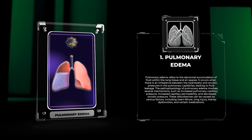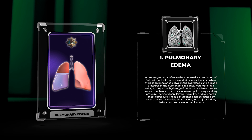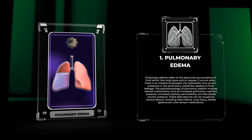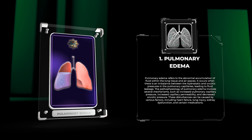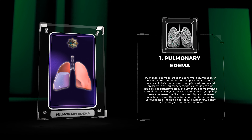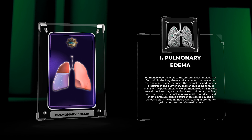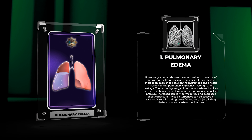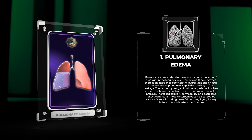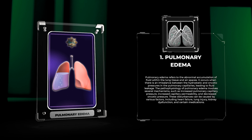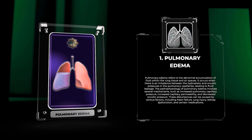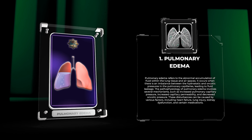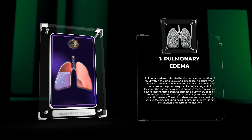The pathophysiology of pulmonary edema involves several mechanisms, such as increased pulmonary capillary pressure, increased capillary permeability, and decreased oncotic pressure. These disturbances can be caused by various factors including heart failure, lung injury, kidney dysfunction, and certain medications.